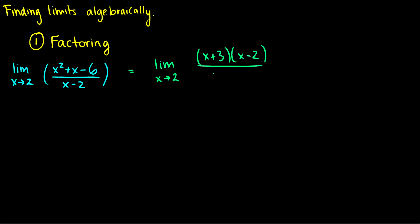On the bottom we still have x minus 2, and at this point these can cancel. We'll be left with the limit as x goes to 2 of x plus 3, and at this point we can just substitute x in. So it's 2 plus 3, which is equal to 5.